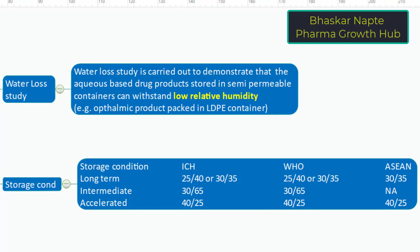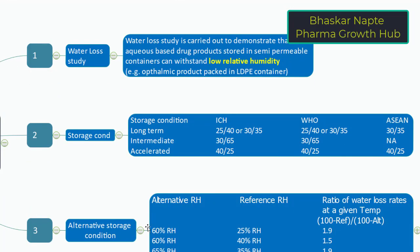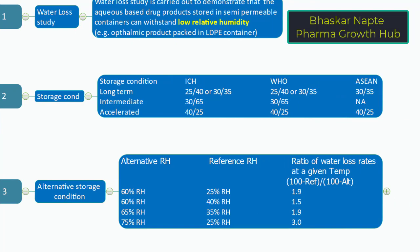How can one conduct the water loss study if the required chamber is not available? For example, if you do not have a 25°C / 40% RH chamber for long-term testing, or if you need accelerated conditions at 40°C / 25% RH — these are not common conditions and the chamber may not be available. The guidance therefore provides alternative storage conditions, so you need not worry if the exact relative humidity condition is unavailable. However, the temperature must remain equal.